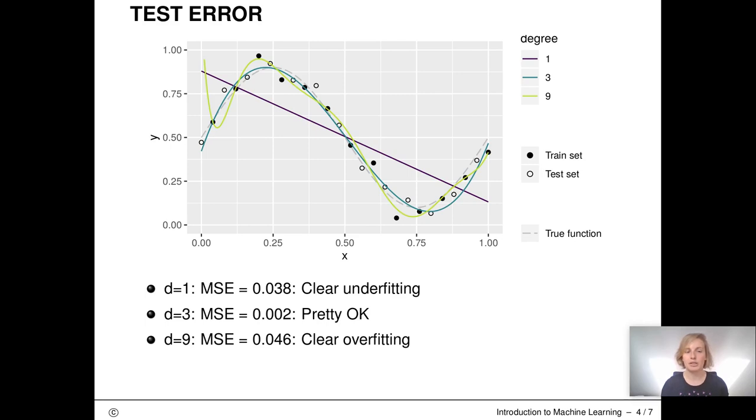The green line, however, which is the polynomial with d equal to nine, is a bit too wiggly. It tries to go through all the dots in the training data.